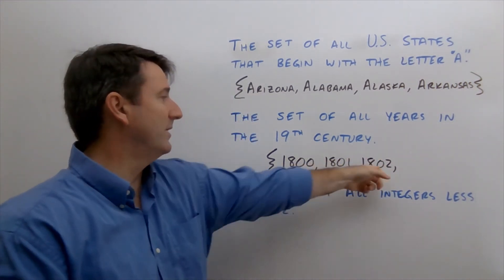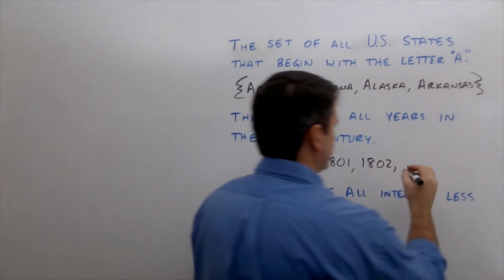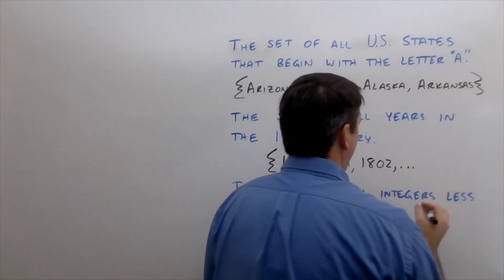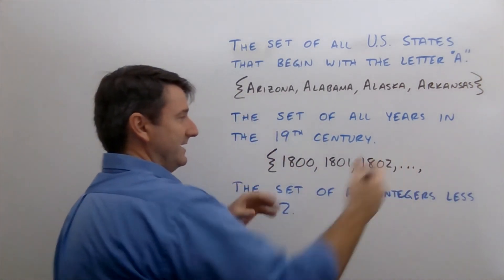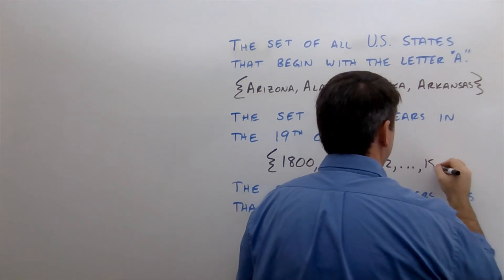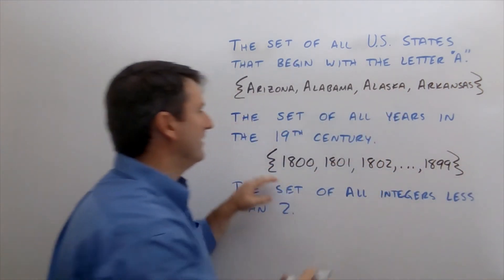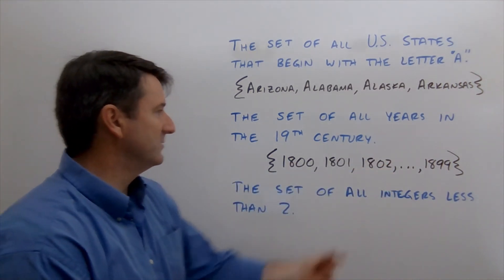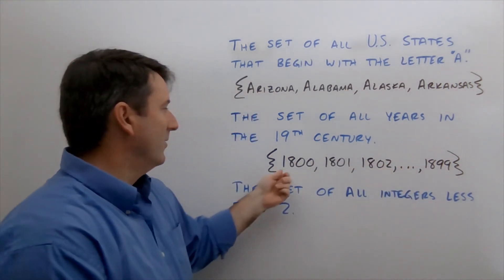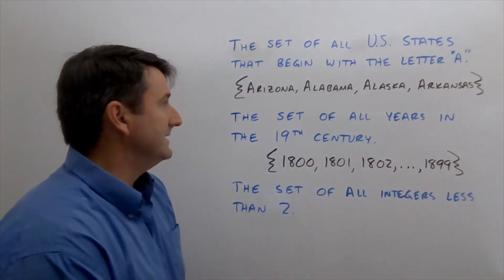We're going 1800, 1801, 1802. And then we're going to use an ellipsis, just dot, dot, dot, and then another comma. And then we'll put the last year in this set, which would be 1899. So that's how we would indicate this set in set notation. We're using this ellipsis to say we're going to continue this pattern all the way up to 1899.